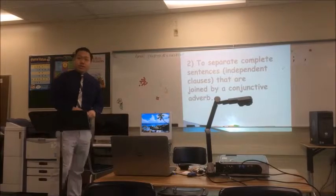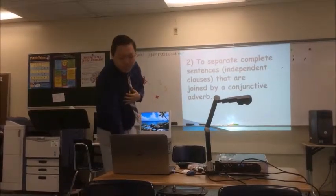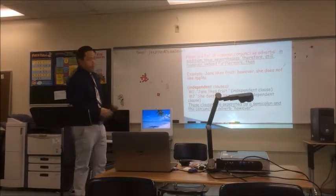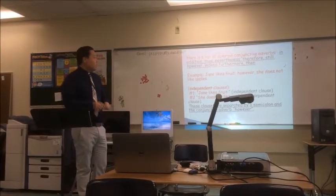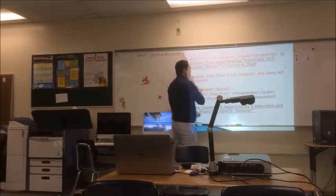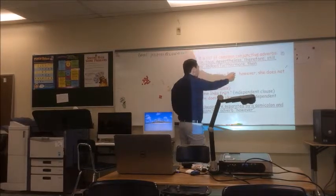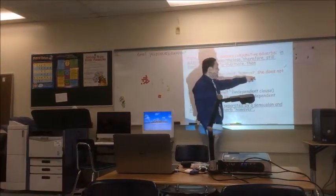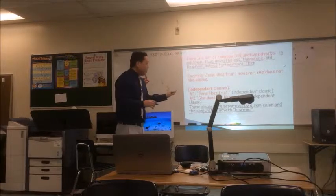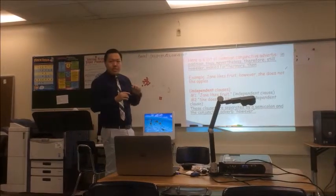Can someone read the second one, please? To separate complete sentences — independent clauses — that are joined by a conjunctive adverb. These are common conjunctive adverbs — not everything, but the ones you'll see most of the time. Example: Jane likes fruit. However, she does not like apples. Just like the first rule, these two sentences relate. Because the word 'however' is there, you put a semicolon before it and a comma after it. When you see two related sentences with a conjunctive adverb between them, use a semicolon before and a comma after.